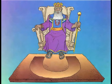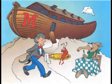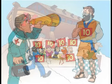Next: that M is on an ark — that makes it a Mark. What's he doing? He's giving an anteater a serving — he's serving an ant. Servant. The book of Mark is about being a servant.